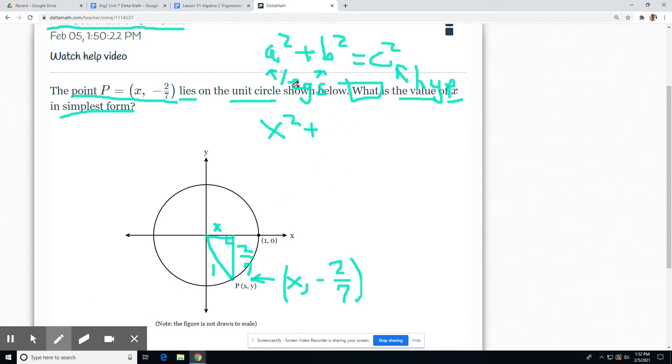And then we have, so the X is what we're looking for. It's one of the legs. 2 over 7 is one of the other sides. And then the hypotenuse is 1. We've just plugged everything in.